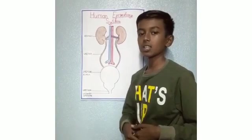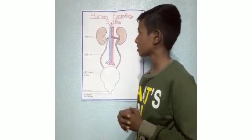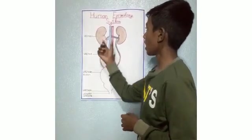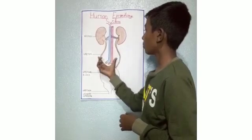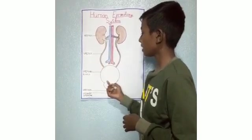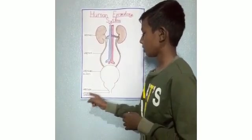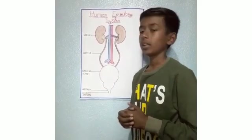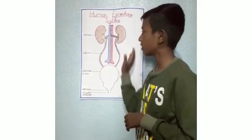First let us see the parts of the human excretory system. There are two kidneys, two ureters, one urinary bladder, urethra, and urinary opening. Now let us see the functions of all these parts.